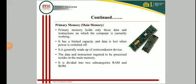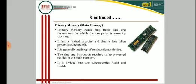Primary memory is also called main memory, which determines the active memory space of a computer where all data and instructions being used under functional conditions are held. The primary memory is limited and data is lost from this space in case the power is switched off. This memory is made up of semiconductor devices.